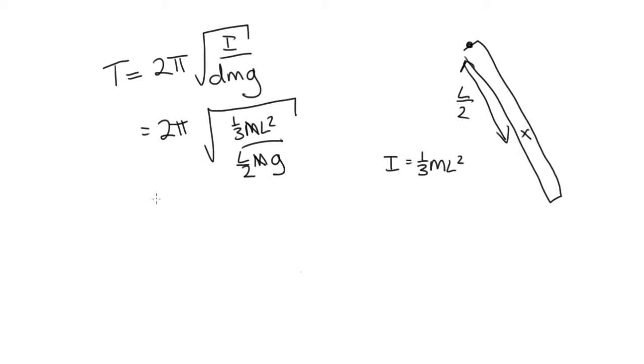So now canceling that out, we have 2π root. This l here will cancel one of those, and we end up with 2 over 3 l over g. And so that tells you the period of the rod in this question.